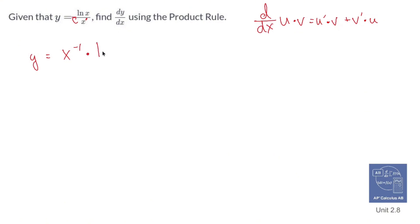I will let u be x to the negative one, I will let v be ln of x, and then follow these rules. So dy/dx, the derivative, is going to equal the derivative of that x to the negative one.